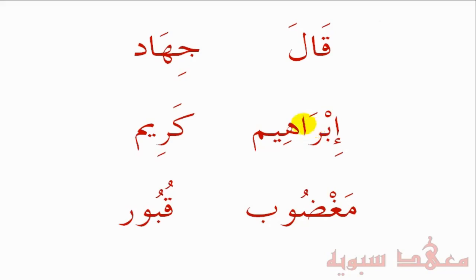'Ibraa-Heem' — Ibrahim. The Ha has a Kasra followed by the Ya, so there's the elongation of the E sound: 'Heem'. Similarly, we have 'Kareem'. The Ra has a Kasra followed by the Ya — this is a Ya here — so 'Kareem', not 'Karim'.